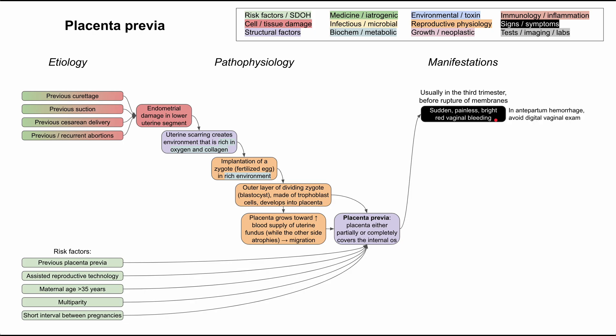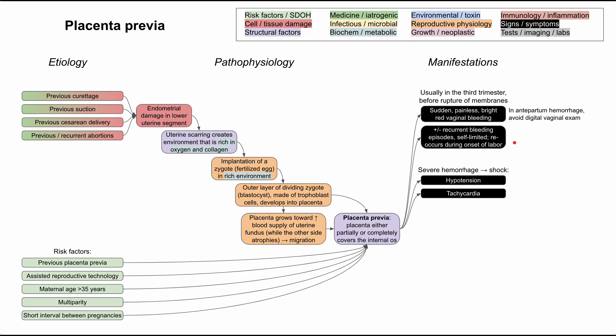If you see antepartum hemorrhage in a patient, avoid a digital rectal exam — especially near delivery time — as you don't want to damage the placenta further. Patients can also have recurrent episodes of bleeding over a few weeks. These episodes are usually self-limited, but tend to reoccur during the onset of labor when contractions create pressure of the placenta against the internal os. In severe cases of hemorrhage, the patient can go into hemorrhagic shock with hypotension and tachycardia, though this is rare and does not happen in most cases of placenta previa.